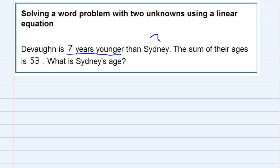I'm going to let Sydney be x and then I can say that Devon is x minus 7. So that if Sydney was 20, Devon would be 20 minus 7, 13.